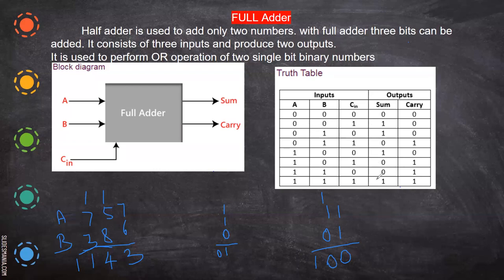So zero plus zero plus zero: sum is zero and carry is zero. When A is zero, B is zero, and carry-in is one, sum is one and there is no carry. Similarly, A is zero, B is one, carry-in is zero: sum is one, carry is zero.